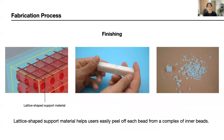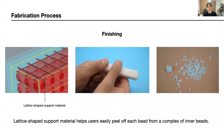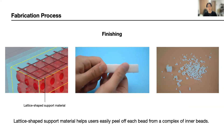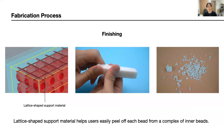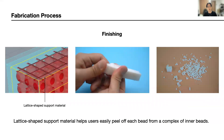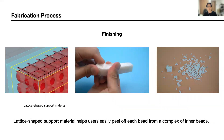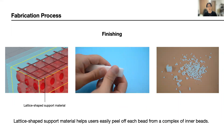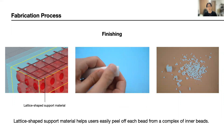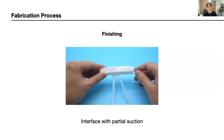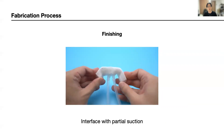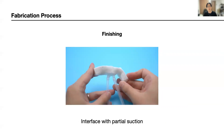During modeling, the layer support material is automatically generated between the layers of the beads to minimize the contact surface between the beads. Thanks to this, even after printing, you can easily peel off the beads inside by compressing them with the force of your bare hands. Finally, connect the tube to the device and you are done.